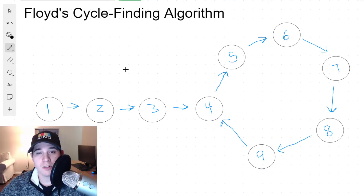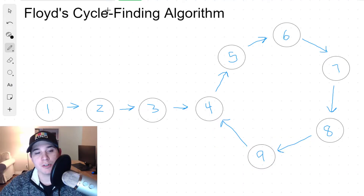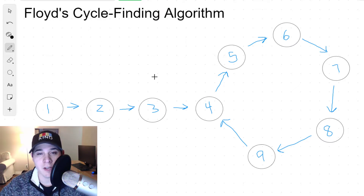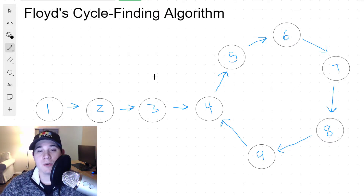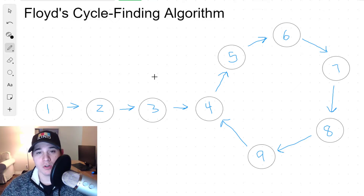There are two parts to solving this problem. The first part is understanding Floyd's cycle finding algorithm, and the second part is knowing how to extract individual digits from whole numbers. Let's go over the first part.